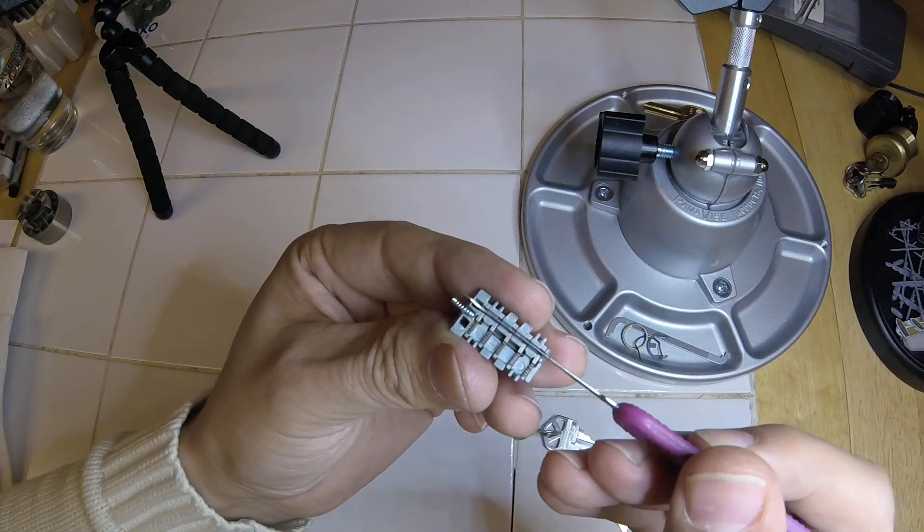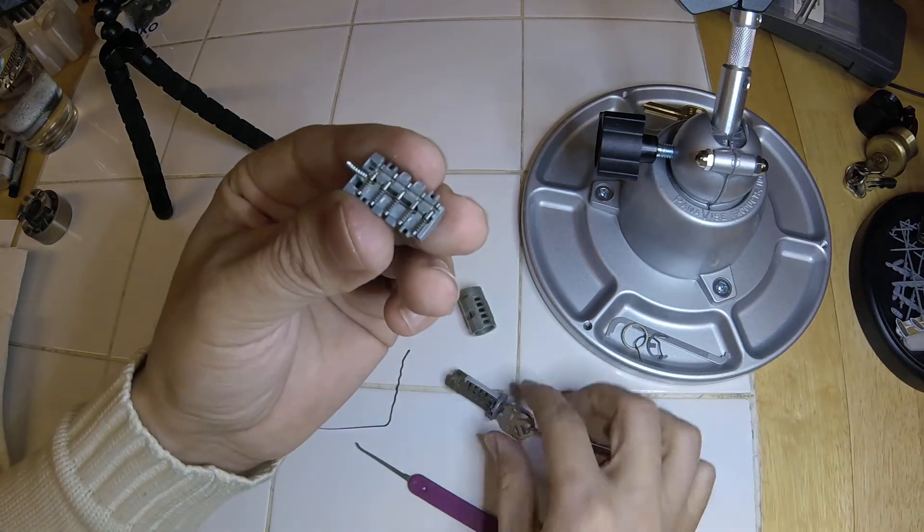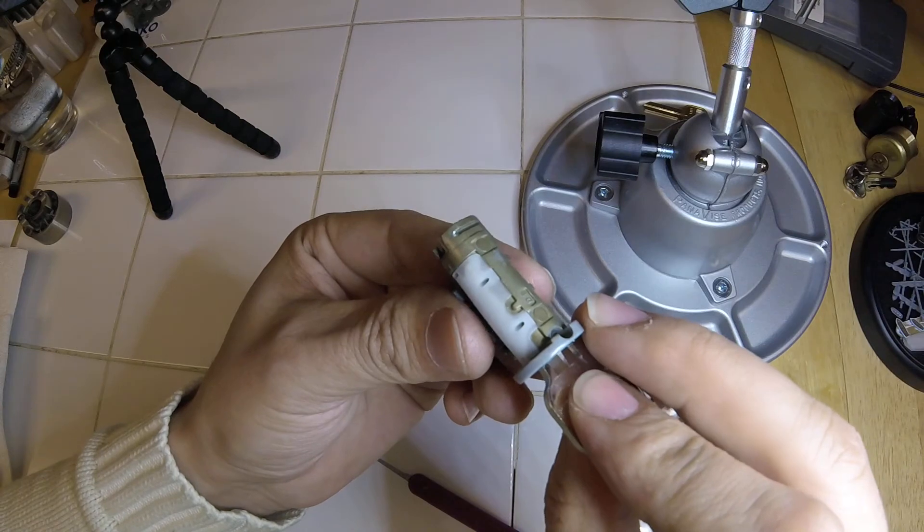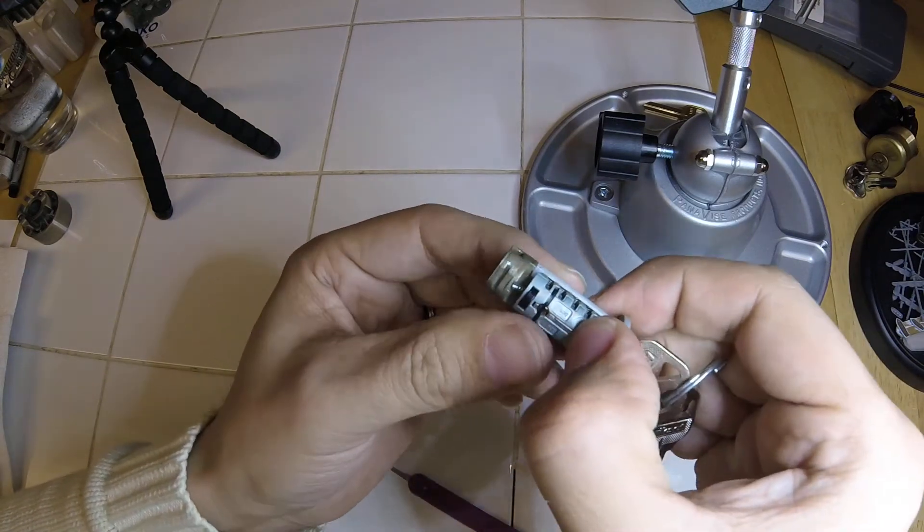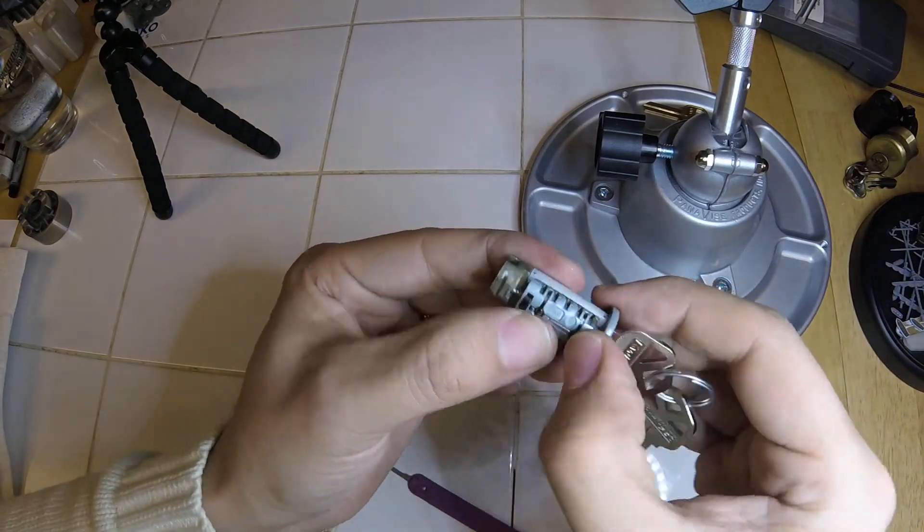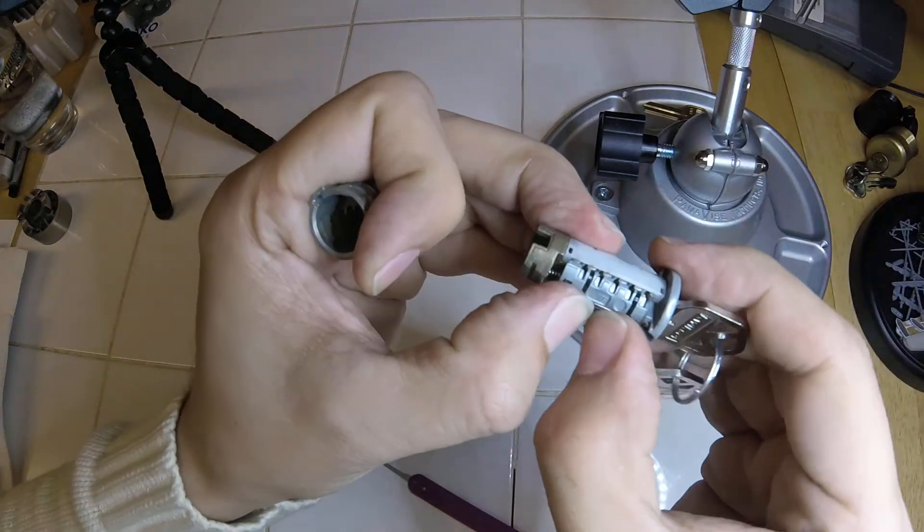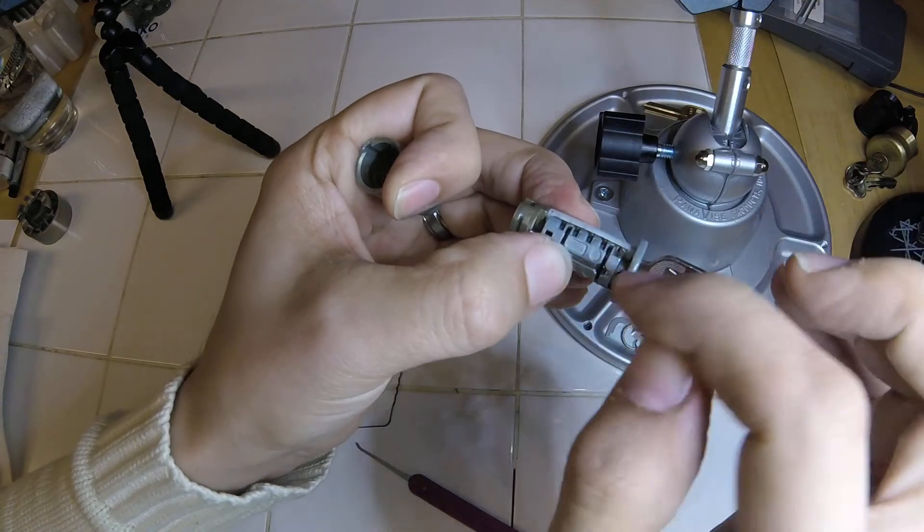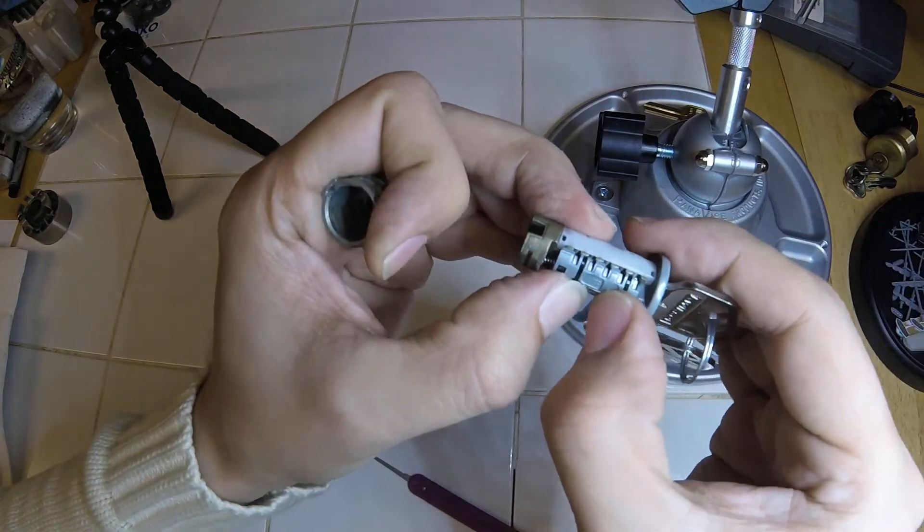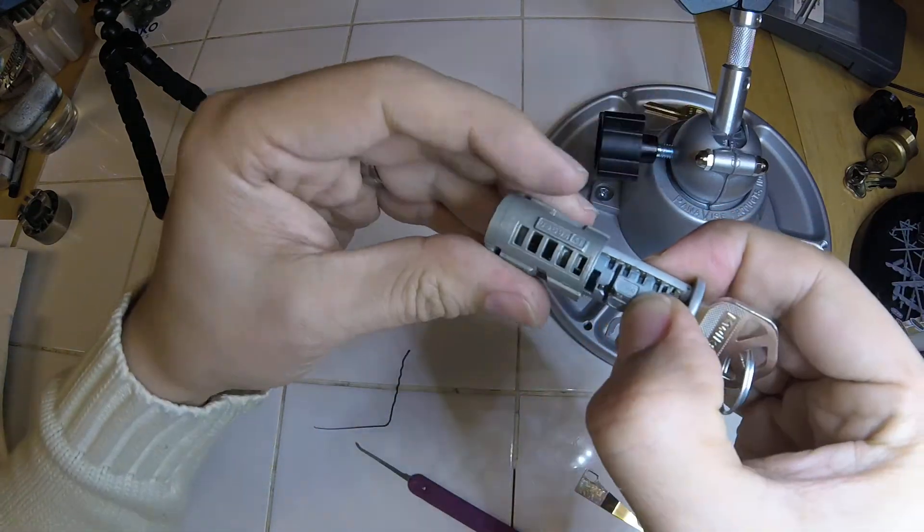You want to make sure that this is all lined up. And you won't be able to put this back in here if you have the key in, if the key is somehow misaligned, because the sidebar won't drop in and that won't allow you to stick it in then.